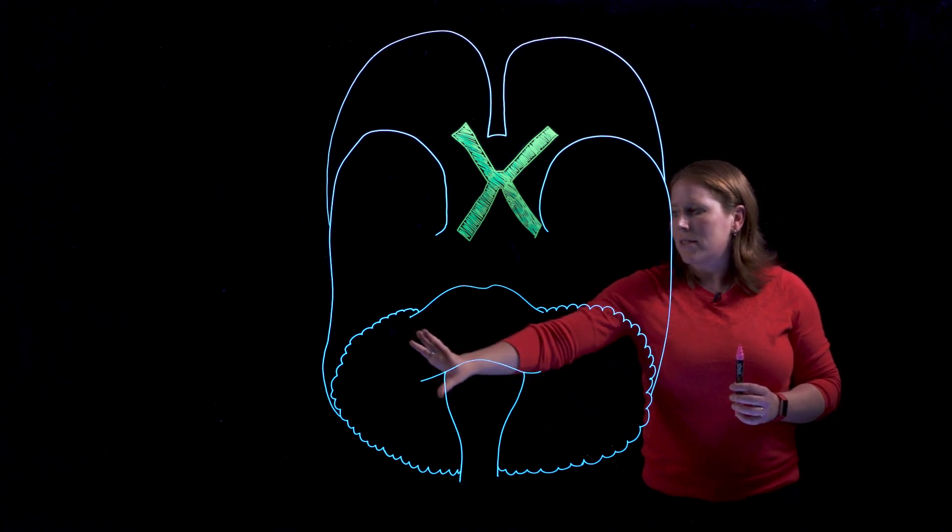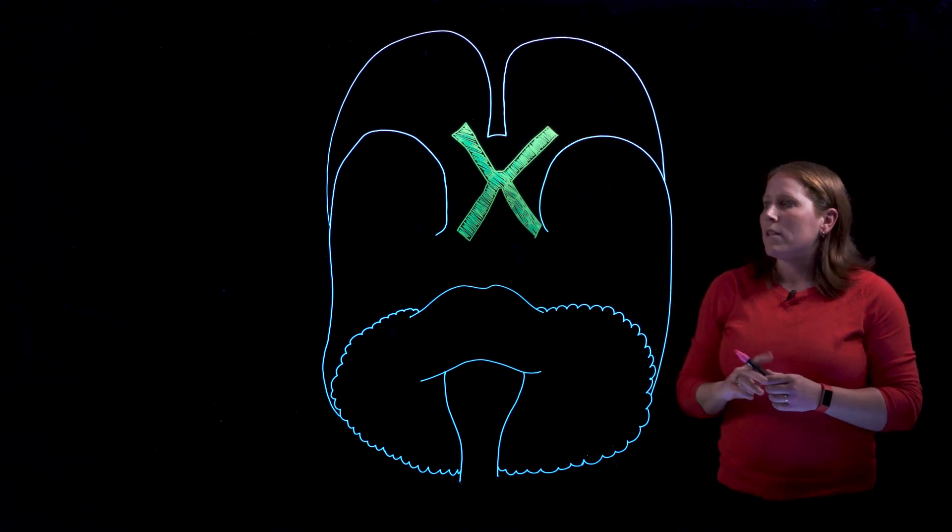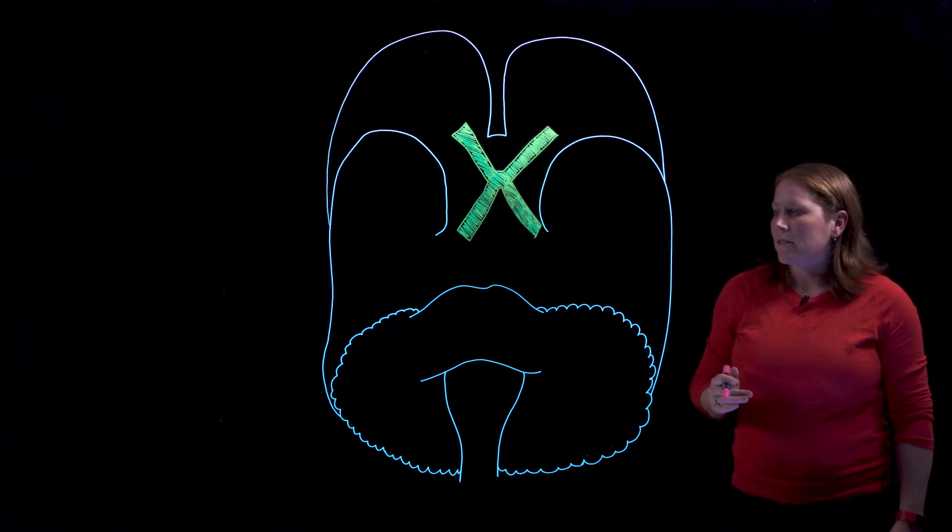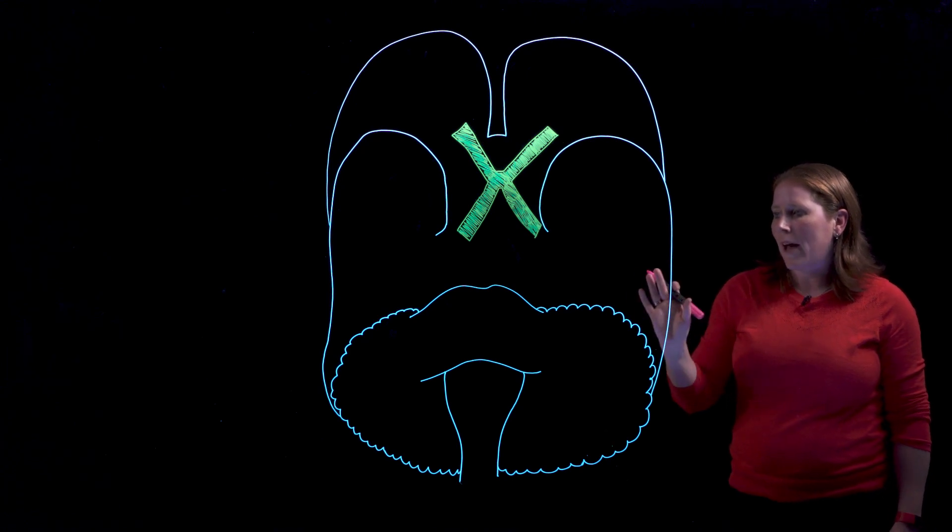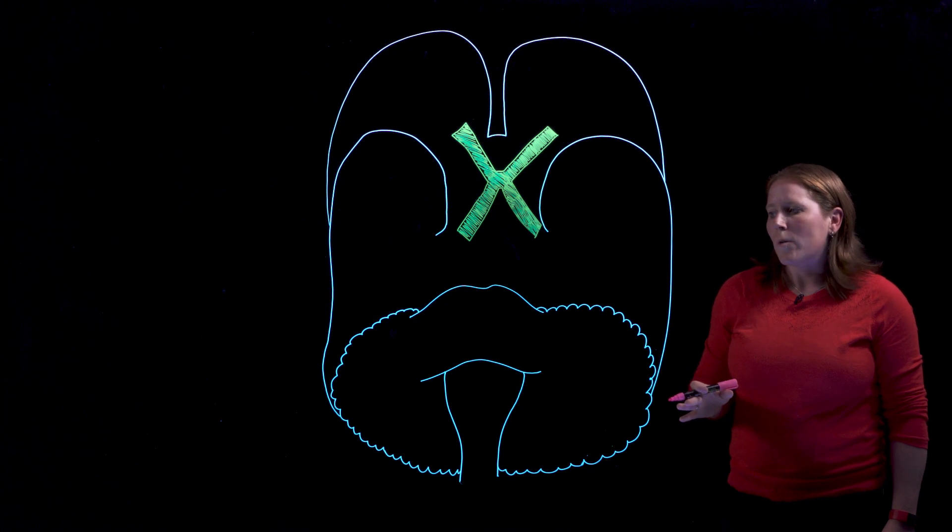this represents the cerebellum. We have temporal poles and frontal lobes there and the big X in the middle is of course the optic chiasm. So adding this level of detail will give you a little bit more context into where the Circle of Willis is located on the inferior aspect of the brain.